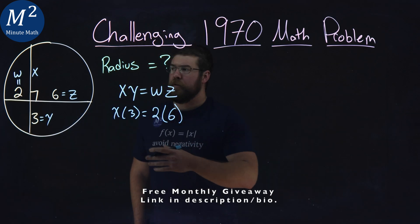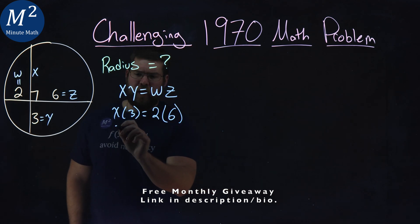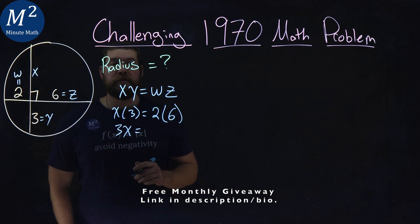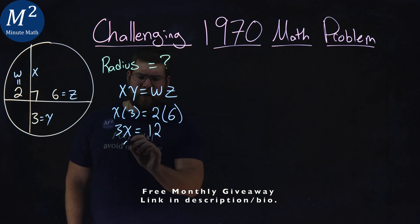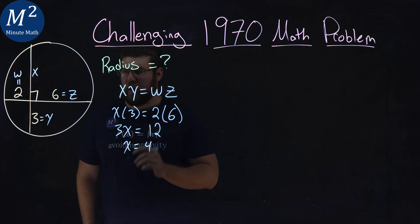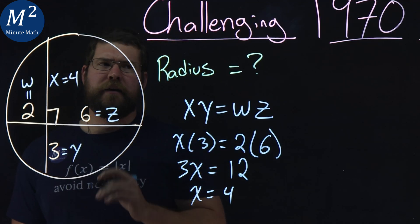So we have x times 3 here is equal to w being 2 times a z value of 6. And we're going to use this to find x here. Easily, 3x here equals 2 times 6 gives me that 12. Divide 3 to both sides, and x equals 4. So we have a value of 4 here.